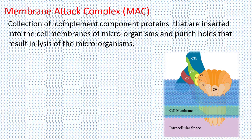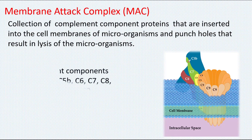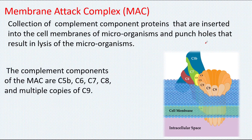The membrane attack complex is the collection of complement components that are inserted into the cell membranes of microorganisms and punch holes. As a result of these holes, osmotic stability of the microorganism is lost, resulting in the lysis of the microorganisms. The main components of the membrane attack complex are C5b, C6, C7, C8, and multiple copies of C9. All these components cooperate and form holes in the pathogen's membrane surface.